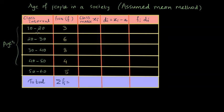So the frequency for 10 to 20 years is 3, 20 to 30 years is 6. That means there are 3 people aged between 10 to 20, 6 people aged between 20 to 30 and so on.